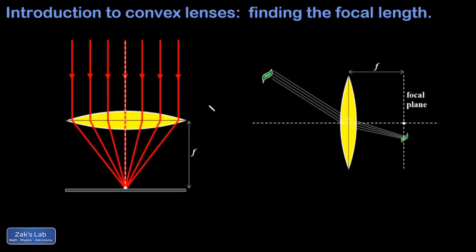Suppose you have a converging lens and you want to find the focal length. One way is to use the best set of parallel rays available — rays coming from the sun. Because the sun is so far away, rays of sunlight are almost perfectly parallel. You hold your lens in the sunlight and move it up and down over a target until the rays focus to a single point. The distance above the target tells you the focal length. Sunlight is intense enough to start a fire if concentrated this way, so be careful. What you've actually formed is not really a single point — it's an image of the sun.